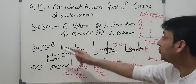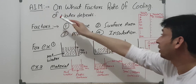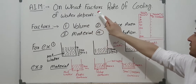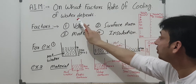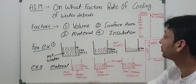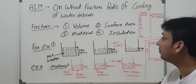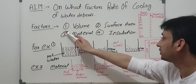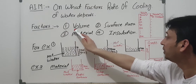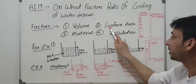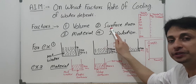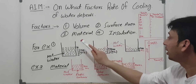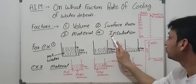The aim of the experiment is: on what factors does the rate of cooling of water depend? The factors are: number one is volume, the second is surface area, third one is material, and the fourth is insulation.